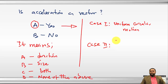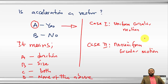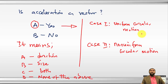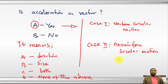We will consider two cases: an object performing uniform circular motion and an object performing non-uniform circular motion. What is unique about uniform circular motion? The speed is constant. What is unique about non-uniform circular motion? The speed varies, and most often the motion is constrained by geometrical factors or external forces.